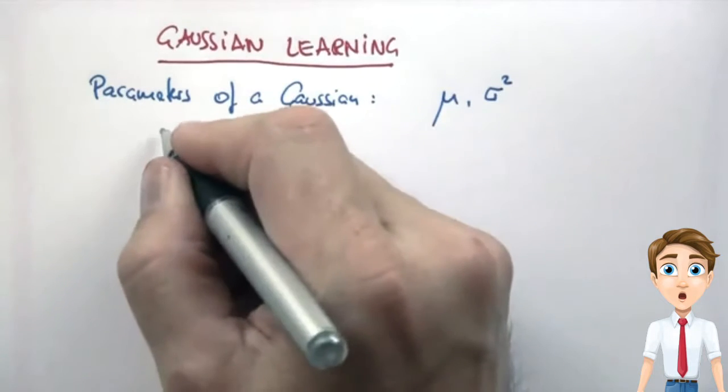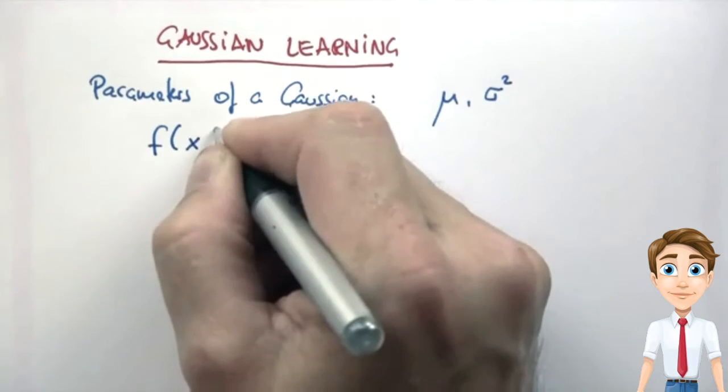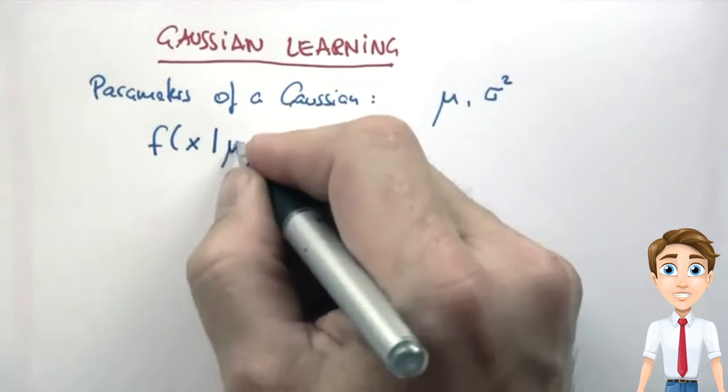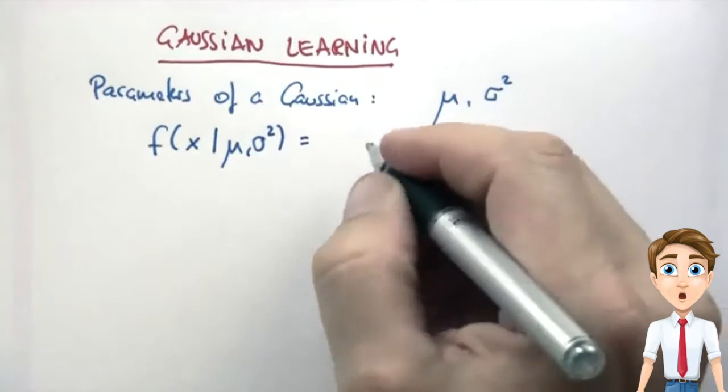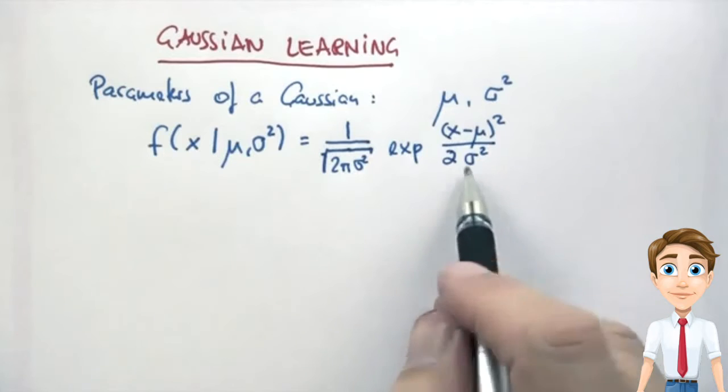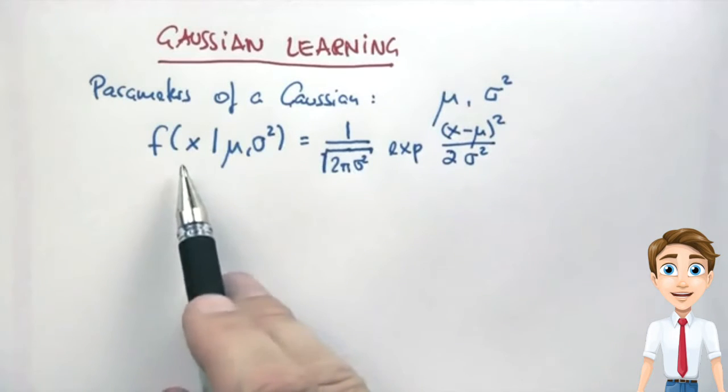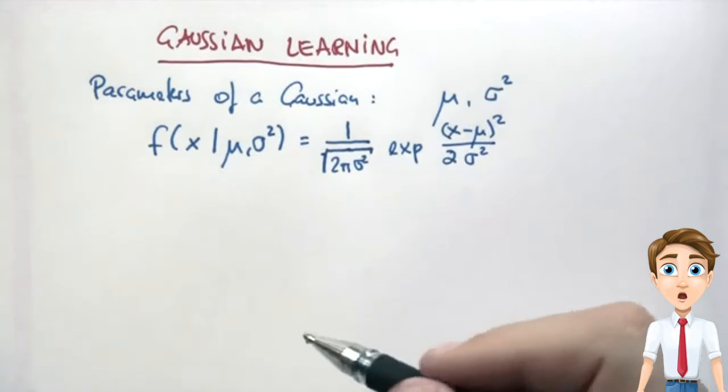So if we look at the formula of a Gaussian, it's a function over any possible input x, and it requires knowledge of mu and sigma squared. We get this function over here that specifies any probability for a value x given a specific mu and sigma squared.